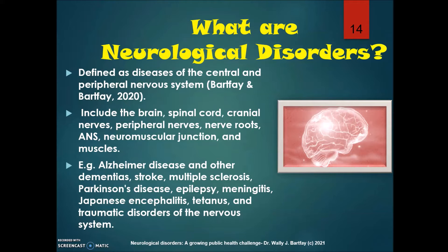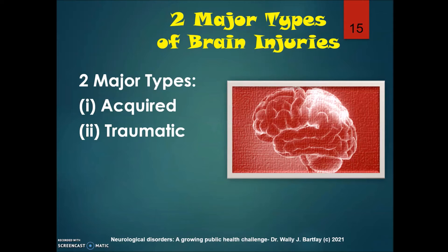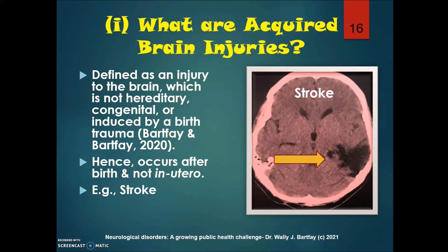Additional examples include meningitis, Japanese encephalitis, tetanus, and thrombotic disorders of the nervous system. There are two major types of brain injuries: acquired or traumatic. Acquired brain injuries are defined as an injury to the brain which is not hereditary, congenital, or induced by birth trauma — it occurs after birth and is not in utero. An example of this might be a stroke.